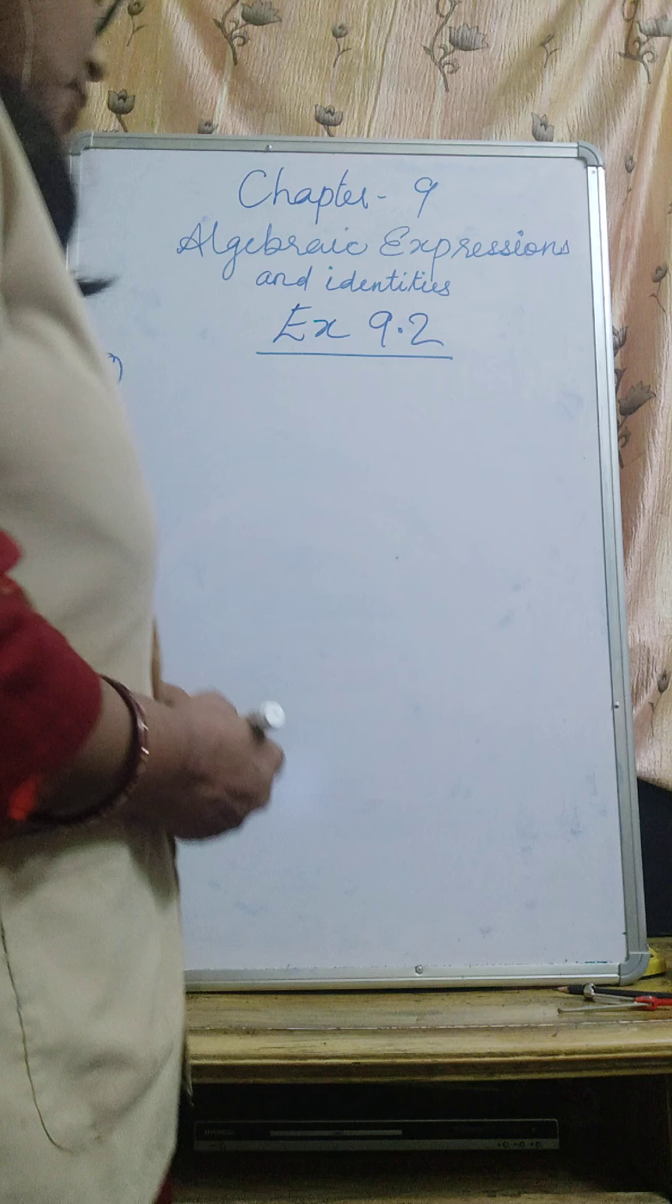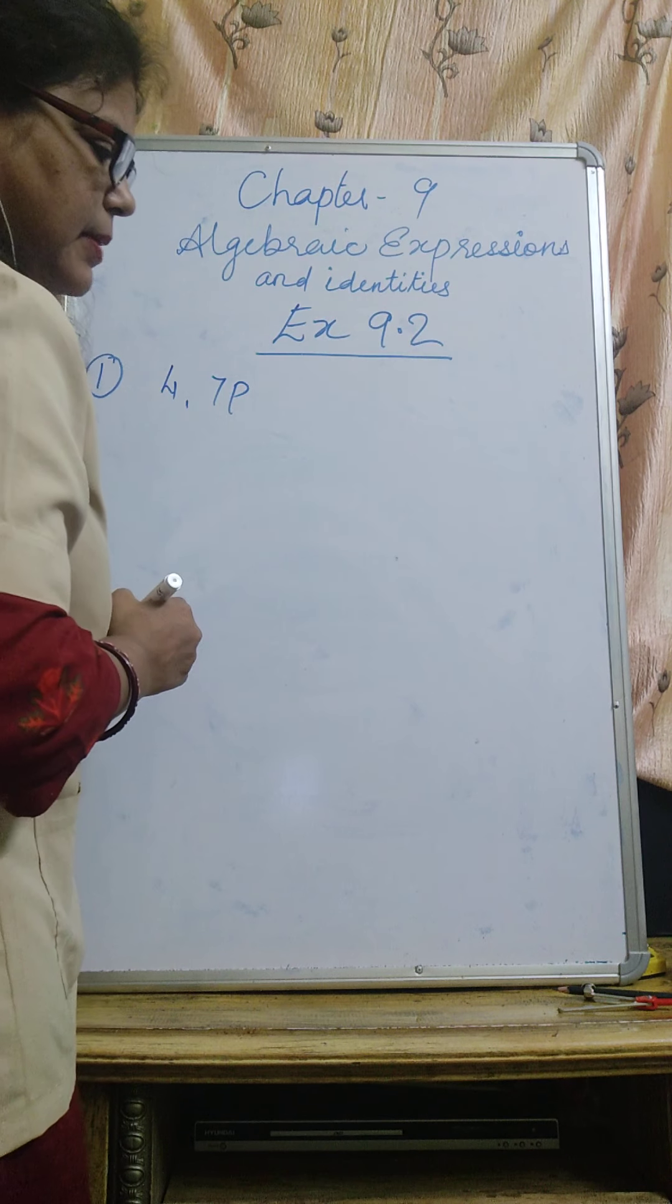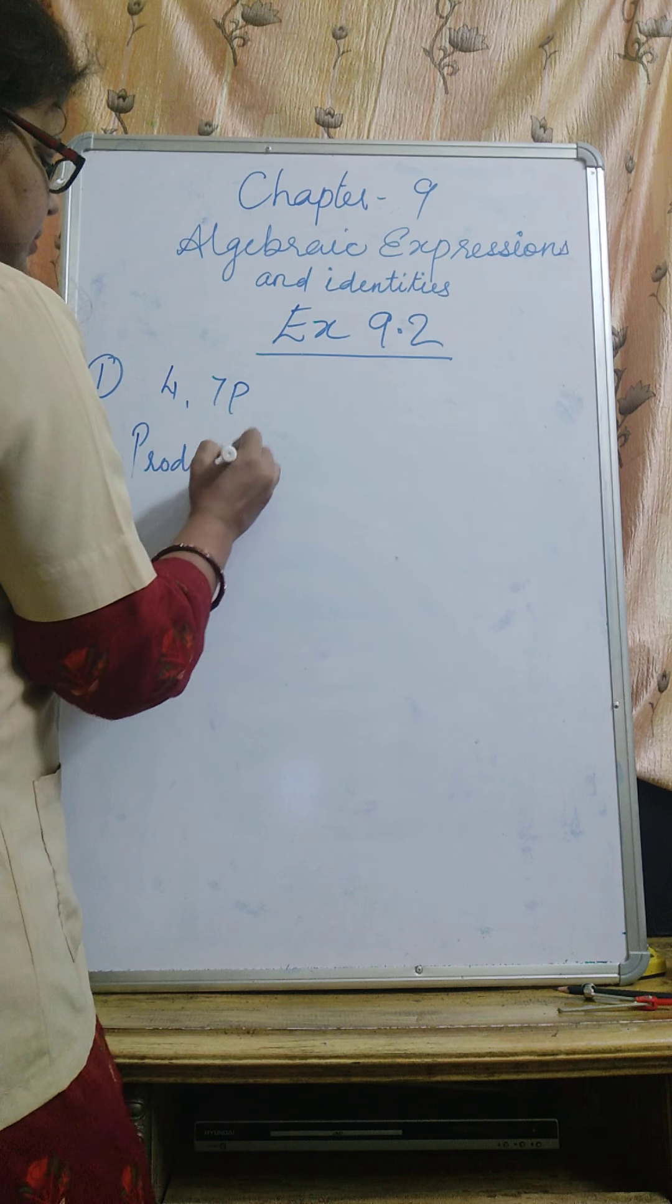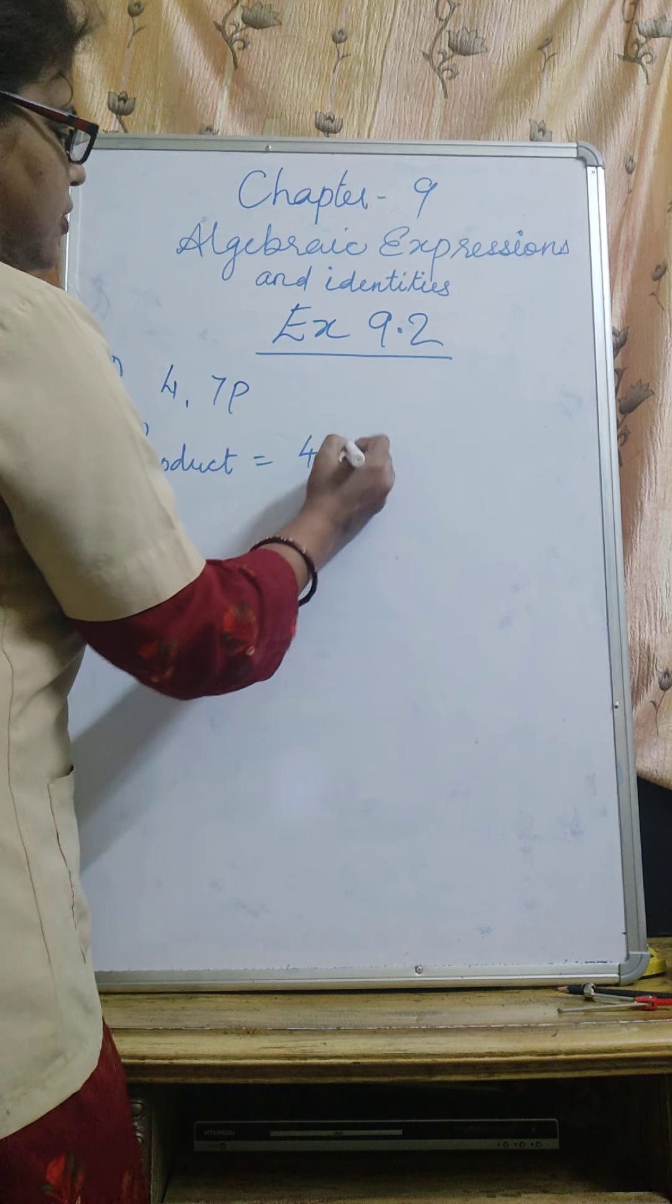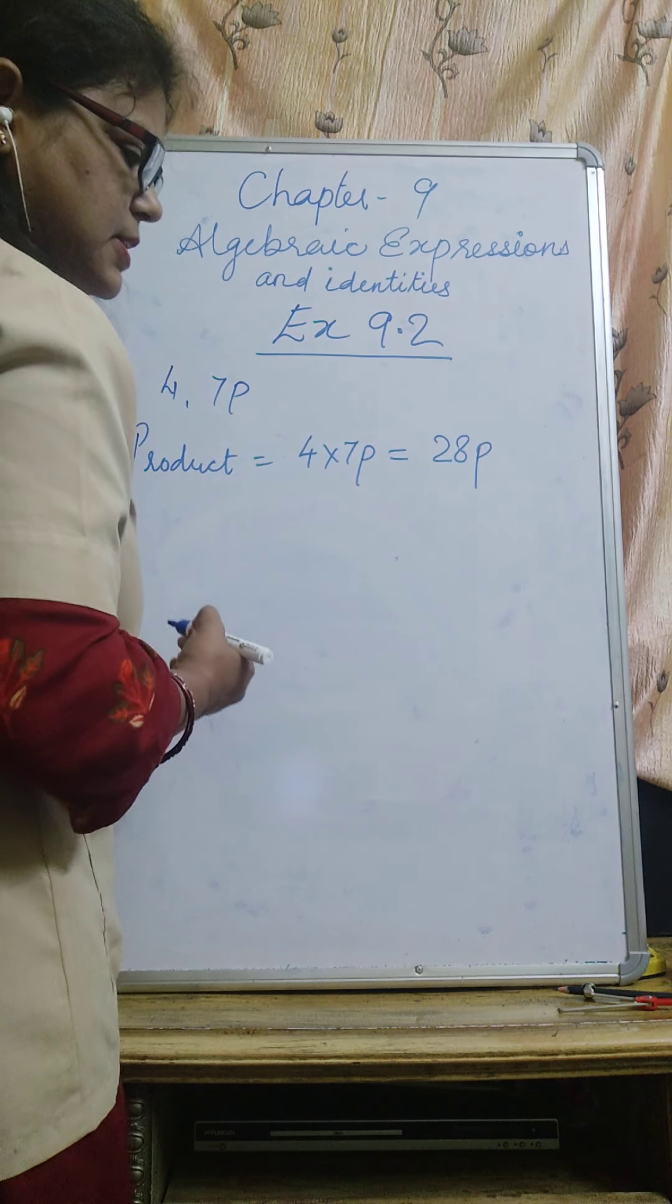First question, find the product. We have to find the product of 4 and 7P. Product means multiplication, so 4 into 7P equals 28P.